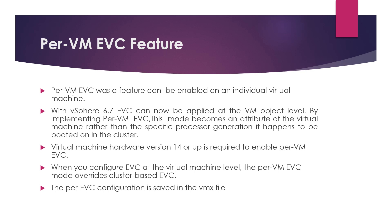By implementing Per-VM EVC, this mode becomes an attribute of the virtual machine rather than tied to the specific processor generation it happens to be booted on. Virtual machine hardware version 14 or higher is required to enable Per-VM EVC. When configured, this setting is saved in the VMX file, and the Per-VM EVC mode overrides the settings configured at the cluster base level.